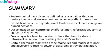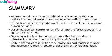Summary of our discussion: we defined environmental hazard as any activities that can destroy the natural environment and adversely affect human health, and desertification as the degradation of land caused by climate change and other human activities. We also said that desertification can be controlled by afforestation, reforestation, and control of agricultural practices by using crop rotation, mulching, and other activities. We also said that the ozone layer is a layer in the stratosphere that helps to absorb ultraviolet radiation from reaching us on the earth's surface, and that certain chemicals react with ozone molecules, rendering it thinner and reducing its power of absorbing ultraviolet radiation.